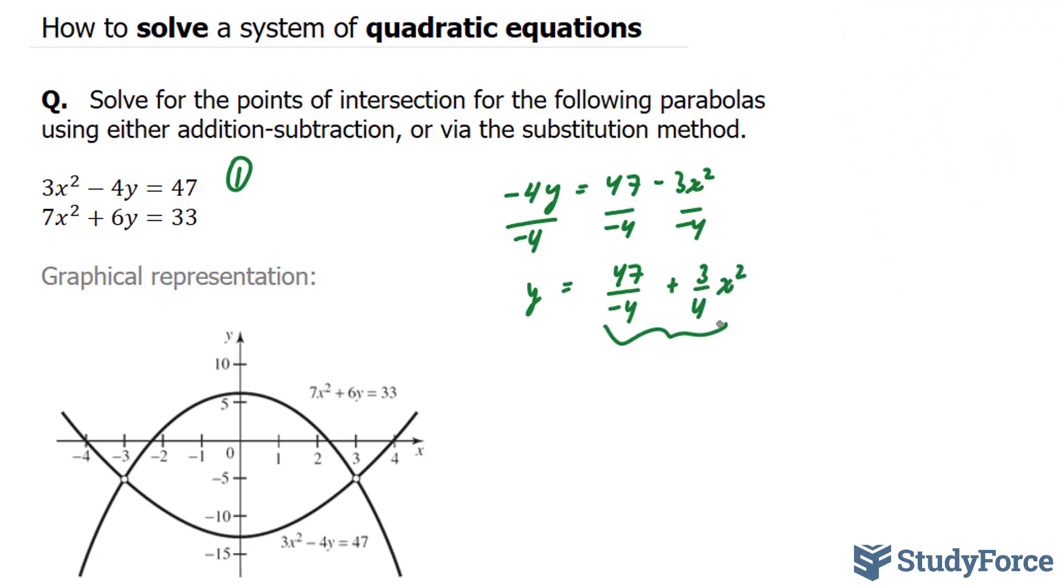Next, I'll take this, and as I mentioned earlier, substitute it into there. Where I end up with 7x squared plus 6 times this part is equal to 33. This is a complicated equation. There are many terms that we need to deal with. The first thing that I will do before I start to isolate for x squared